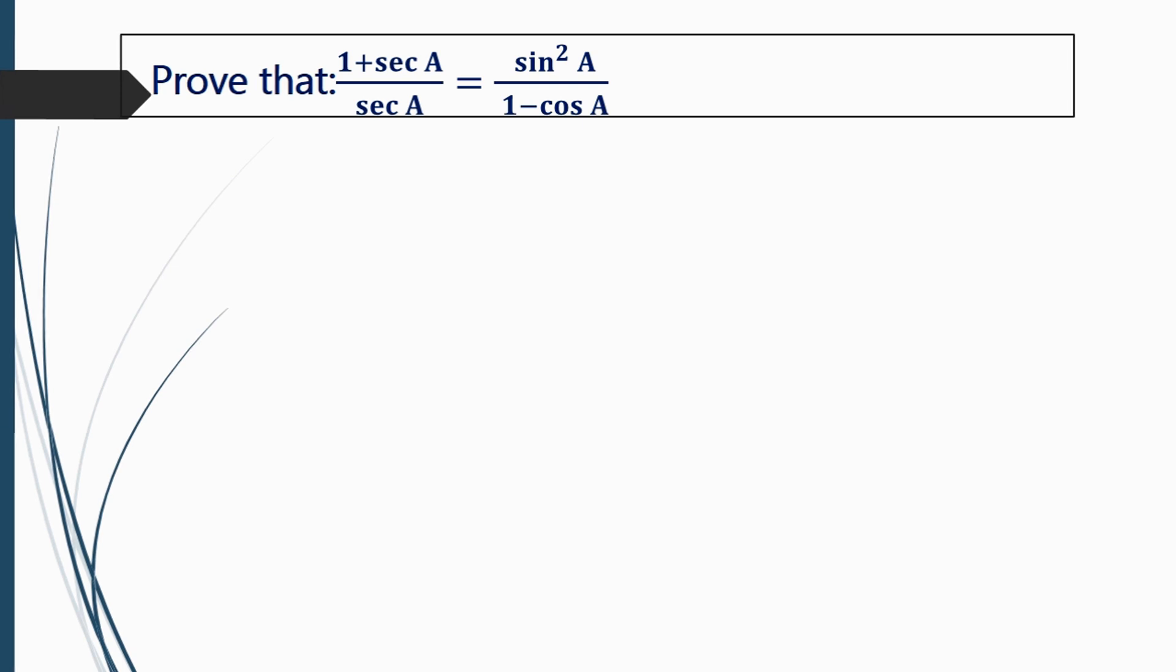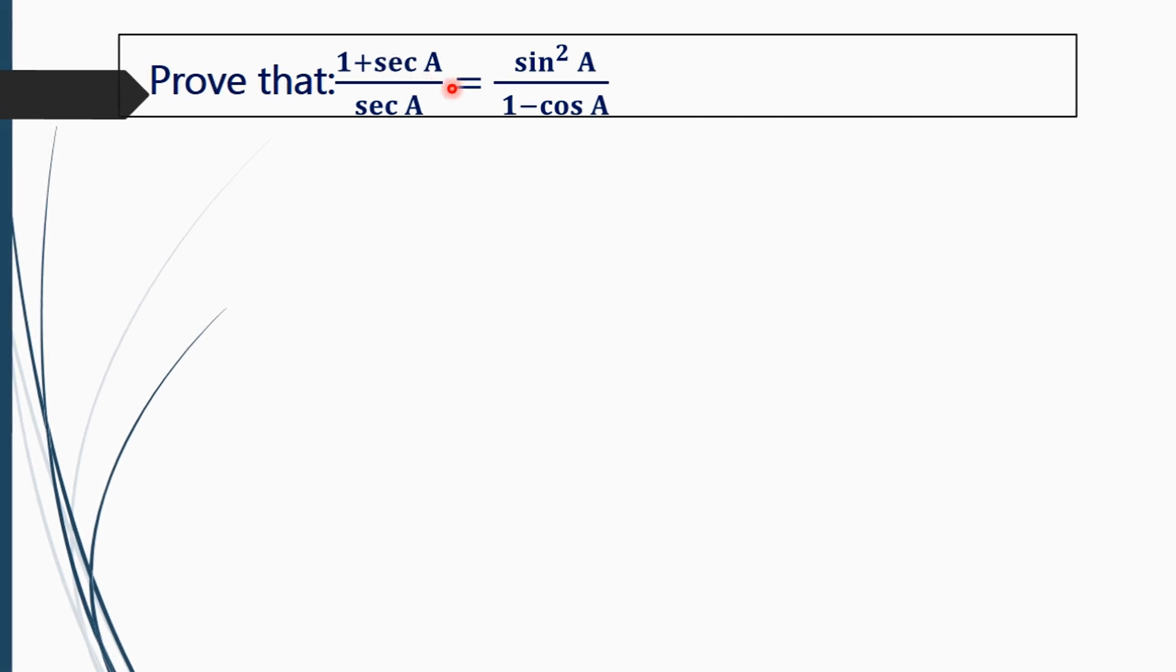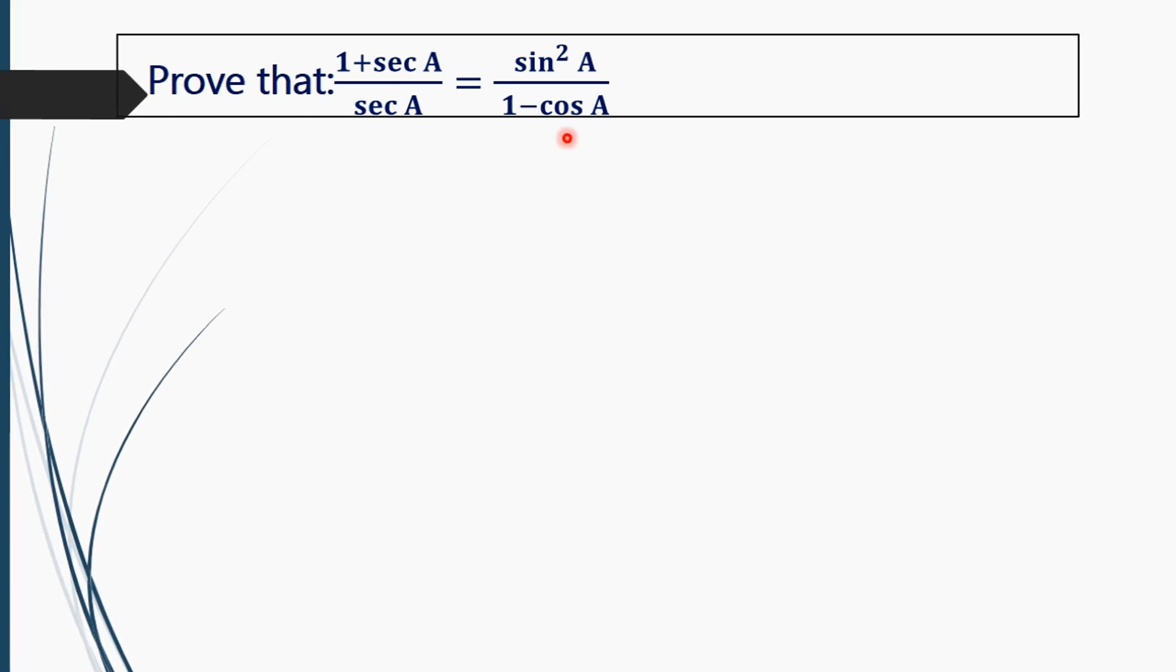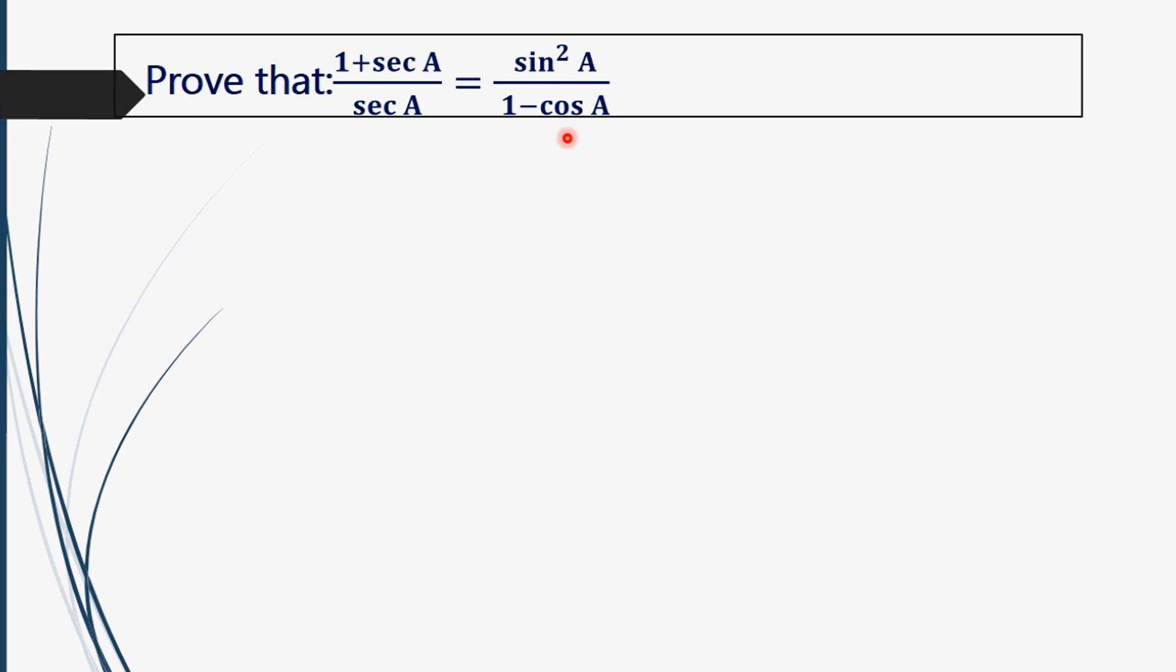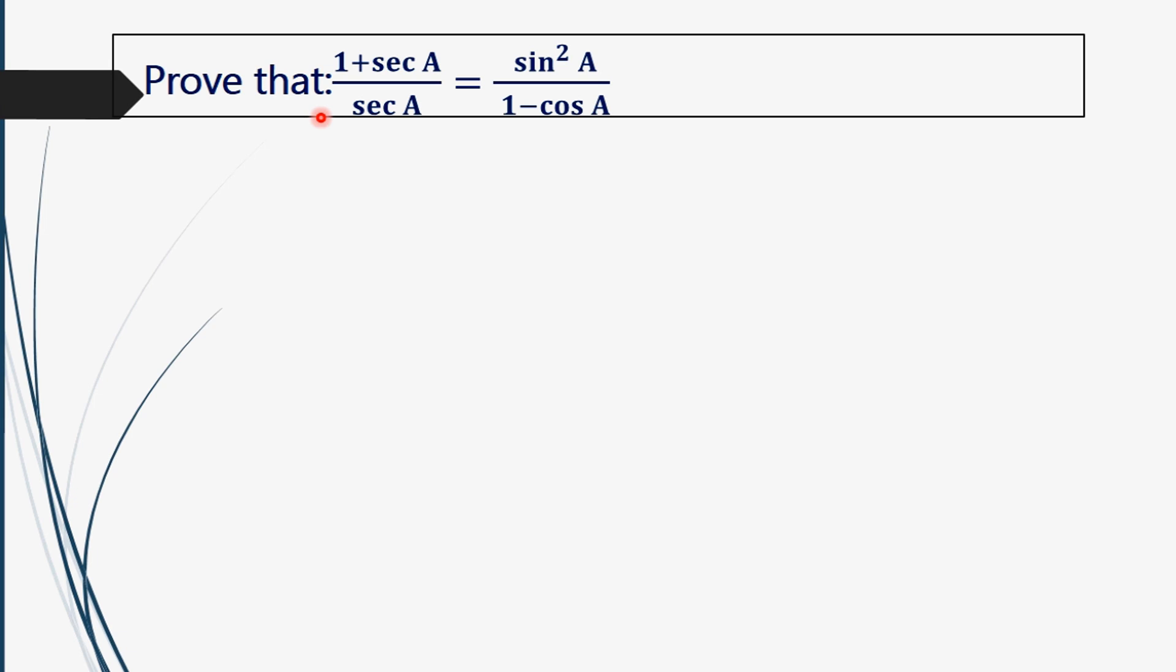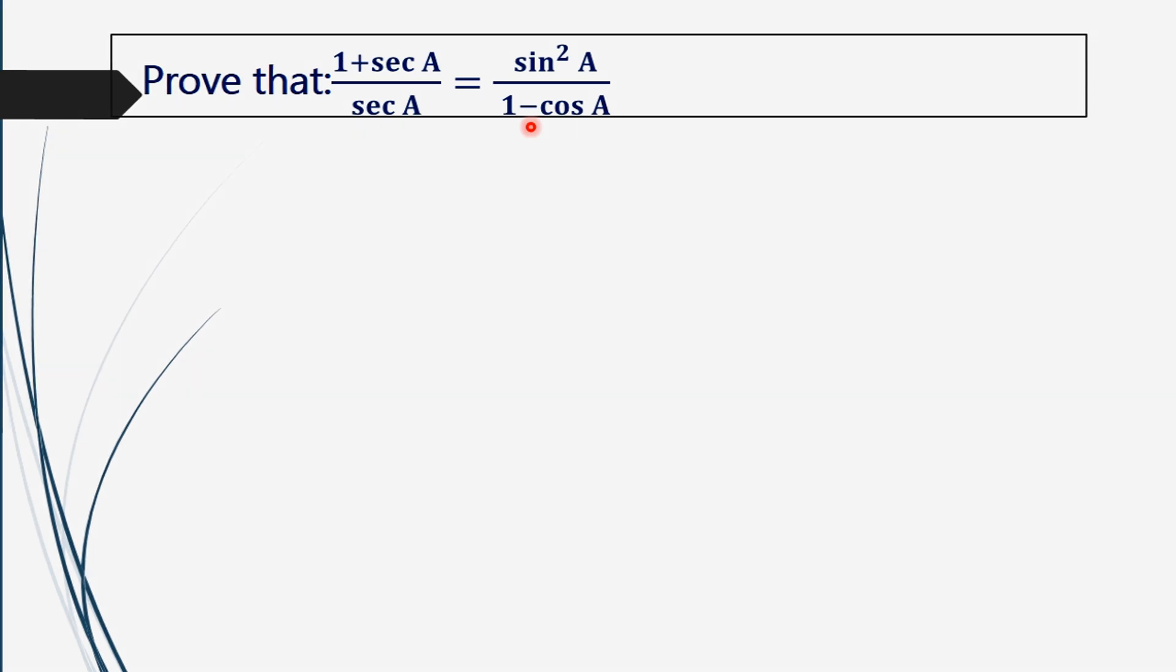We have to prove here that LHS equals RHS, that is (1 + sec A) / sec A = sin²A / (1 - cos A). We are going to adopt the method where we will take LHS separately and simplify it, and we will again take RHS separately and simplify it, then prove LHS equals RHS.